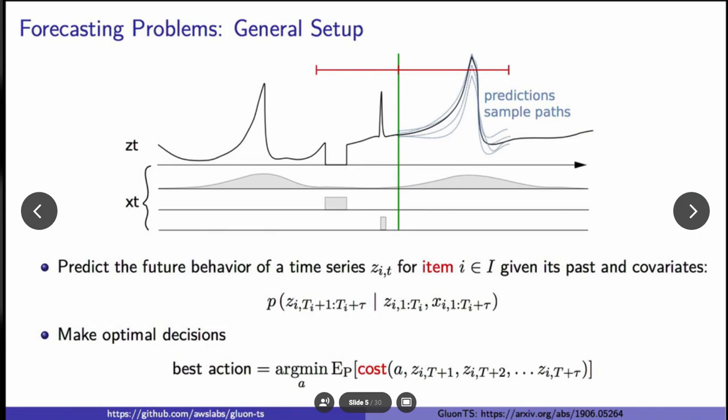Let's go over the general problem. Here you'll see plotted, we have a univariate time series. The observations are given by Zt, and the input covariances are given by Xt. And the X axis here is time.